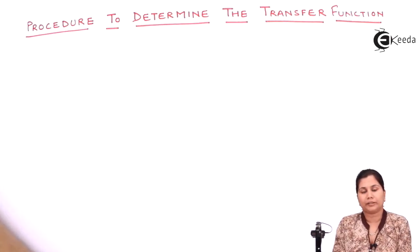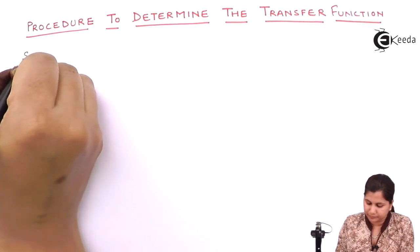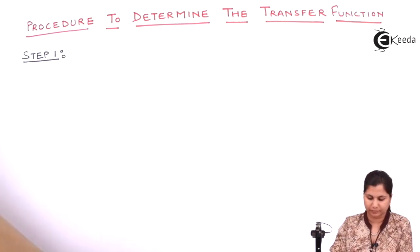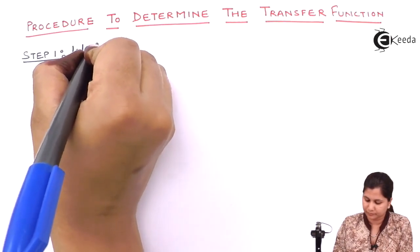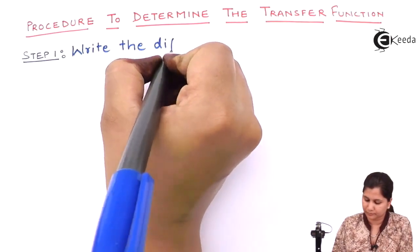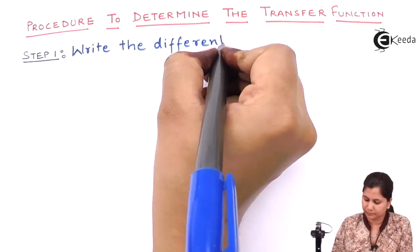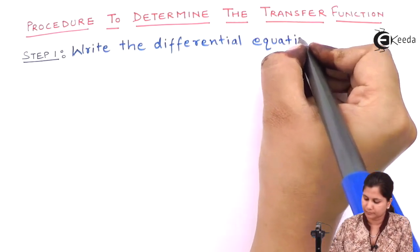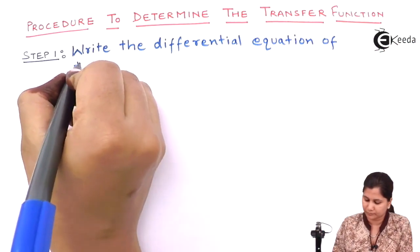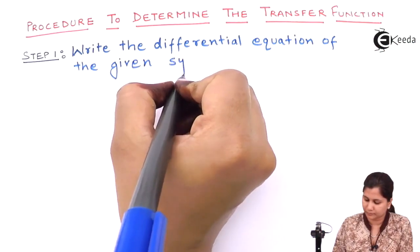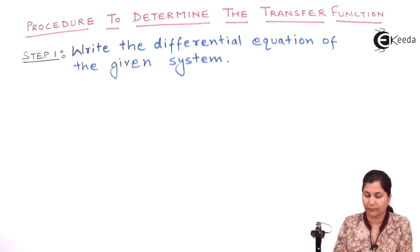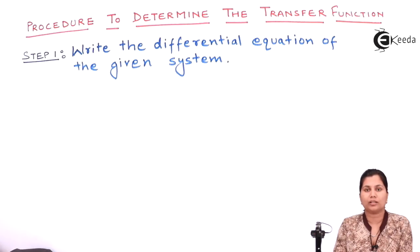The first step to determine the transfer function is to write the differential equation of the given system. First write its differential equation, then we will proceed to the second step.